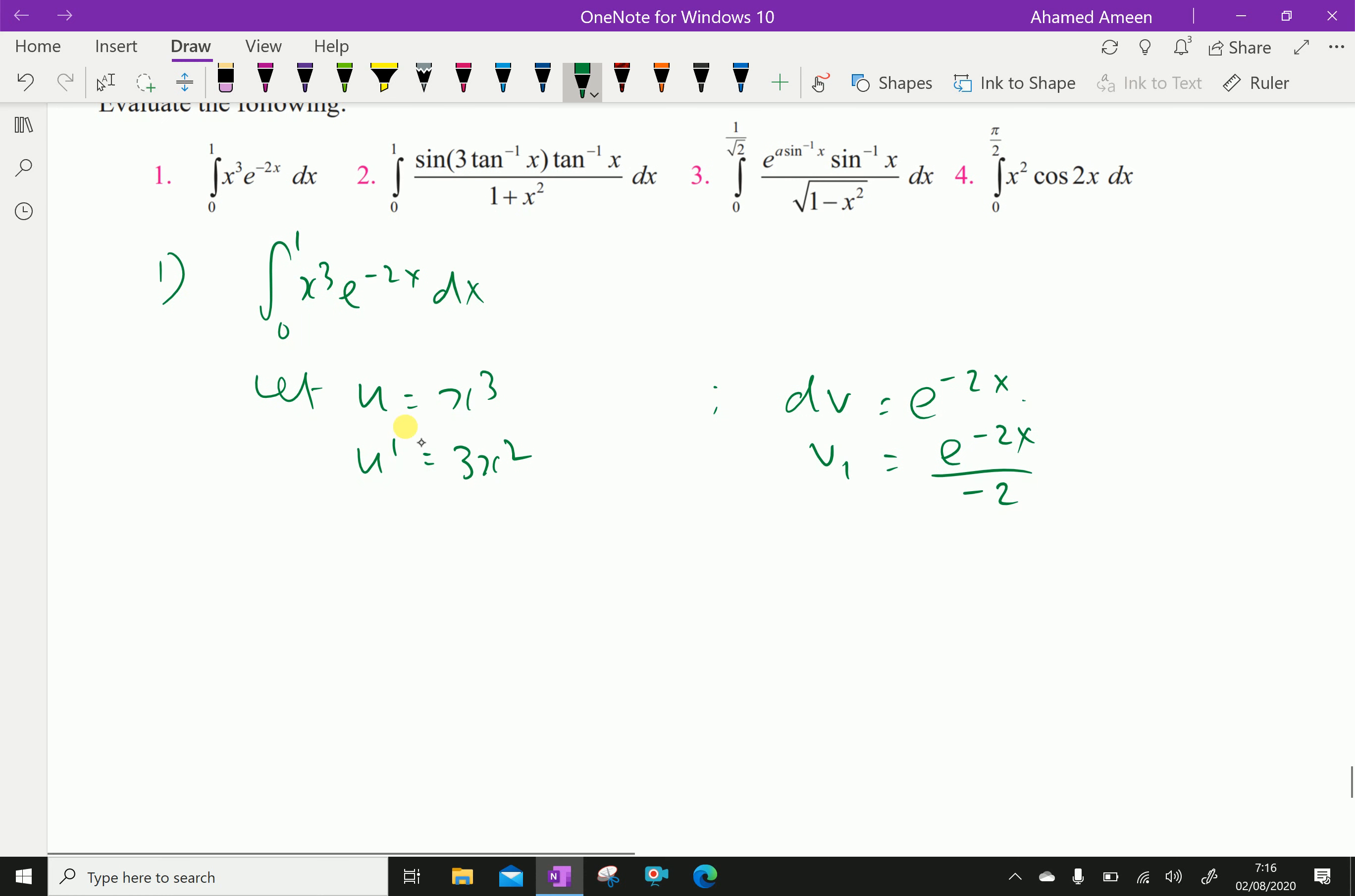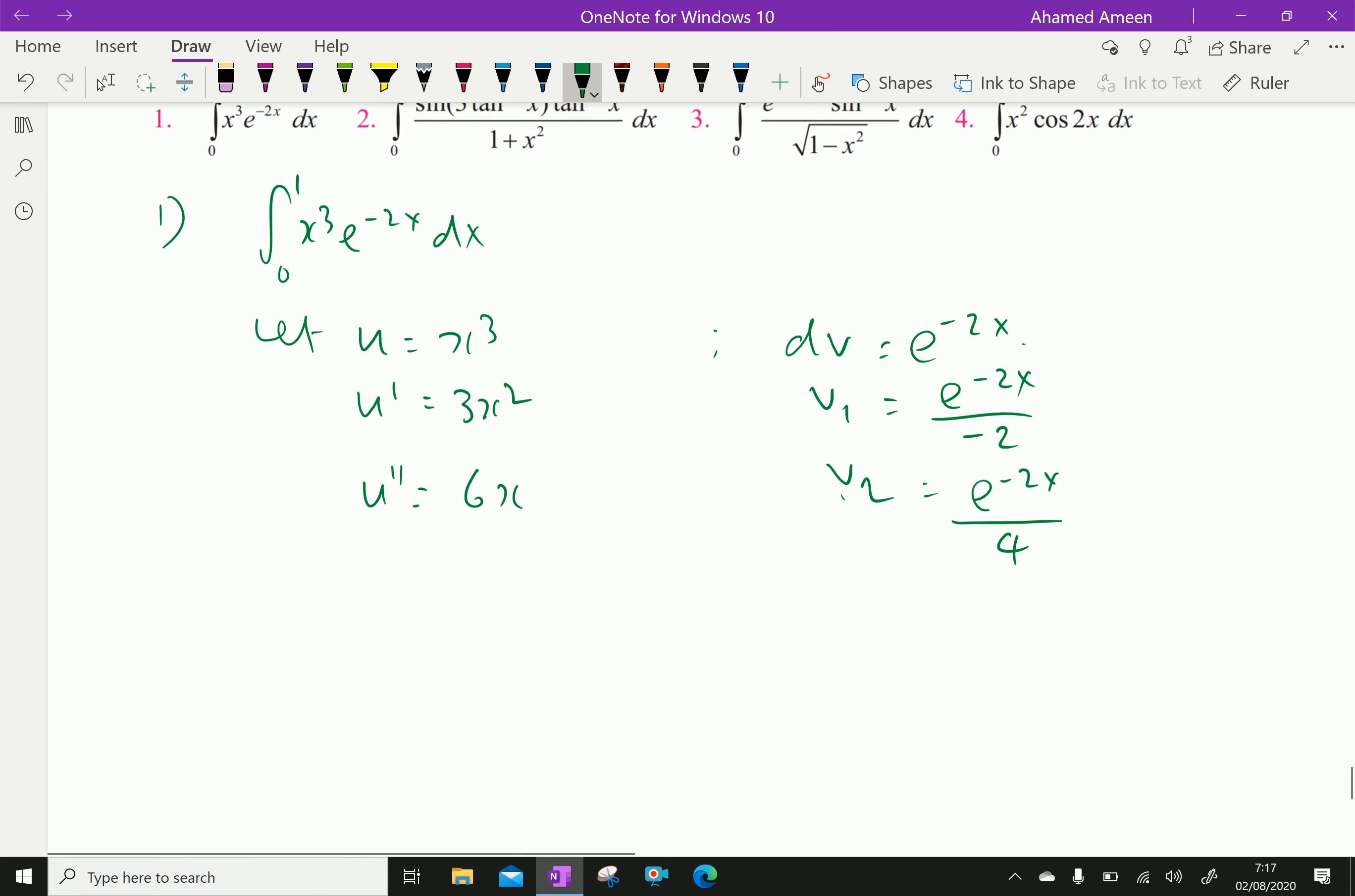Now, u2 dash equal differential of 3x square is 6x and v2 is integral of v1 e power minus 2x. That is, e power minus 2x over 4.